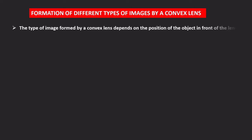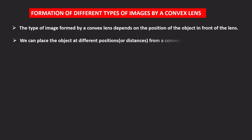The type of image formed by a convex lens depends on the position of the object in front of the lens. We can place the object at different positions from a convex lens to get different types of images.